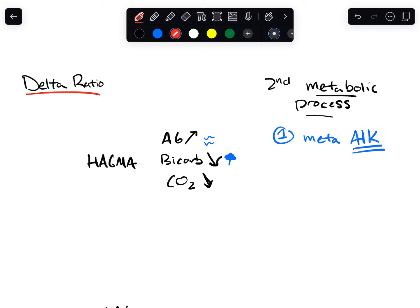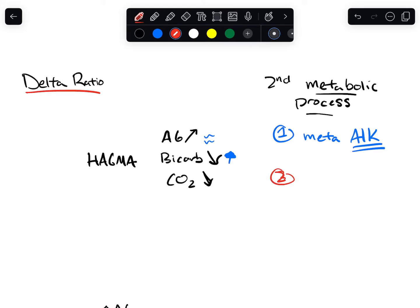The second type of secondary metabolic process is going to be a NAGMA, or a non-anion gap metabolic acidosis. In this process, because it's a non-anion gap process, our anion gap also stays about the same, but now our bicarb is going to be even lower.